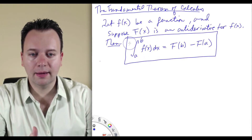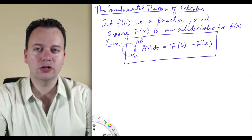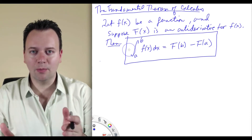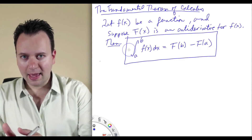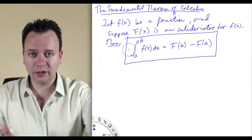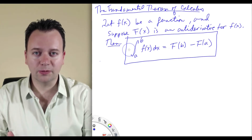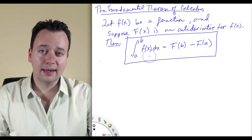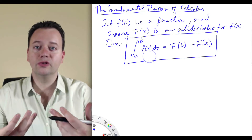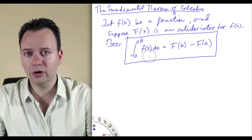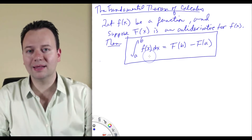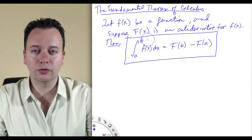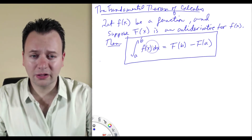We previously saw what goes into the left-hand side, into the definition of the definite integral. We have to break up the interval from a to b into a number of subintervals, then approximate the output of the function once per subinterval. We multiply those values by delta x and sum them all together. The definite integral represents the limit of that as n goes to infinity — as the number of subintervals goes to infinity — until the outputs of our Riemann sum level out at some number, which we call the definite integral of f of x.